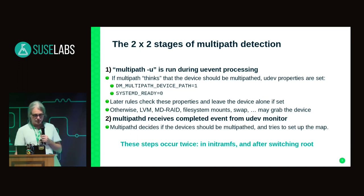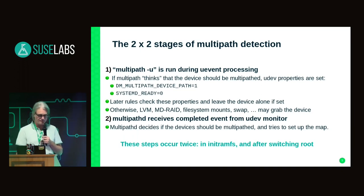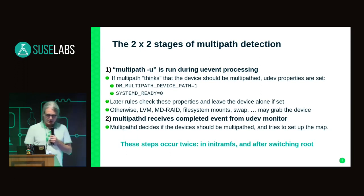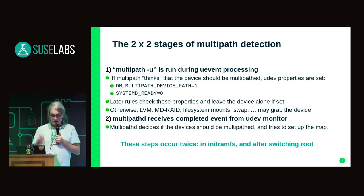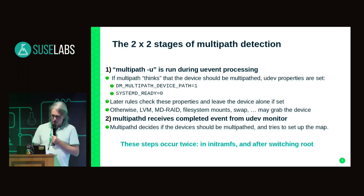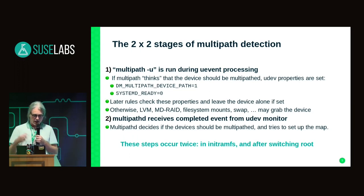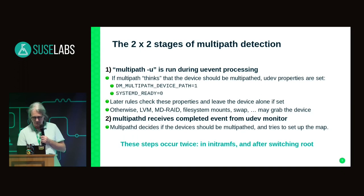When UDEV processing is finished for the event, then multipathd — the multipath daemon — receives the completed event through the monitor socket. It runs through similar logic to decide if it should add this to a multipath map, and if it finds that it is a multipath map path, it tries to set up the map. That is step two. Then the same thing happens again once in the initial RAM disk and again after switching to the root file system. So all in all, we have four stages where we evaluate with some logic whether a device is a multipath map or not.